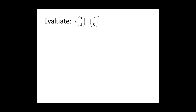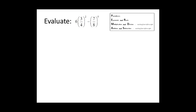Evaluate 6 times three-fourths squared minus seven-eighths to the zero power. We need to remember our order of operations. We start with parentheses — there is nothing to simplify inside the parentheses, so we move on. We do have some exponents, so that's what we'll do next. We will raise three-fourths to the second power, which means we will multiply three-fourths times itself, and we have seven-eighths to the zero power. Any real number raised to the zero power is equal to 1. So three-fourths squared means three-fourths times three-fourths, and anything to the zero power equals 1.